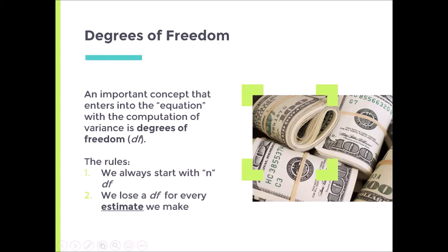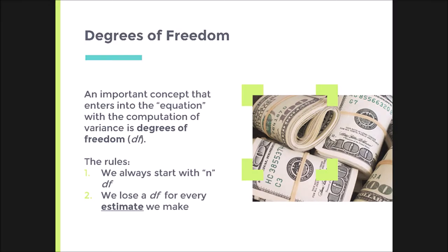So you always start with N degrees of freedom. Why? Because you have as many free scores to various people. So, for example, if I have four scores: three, seven, nine and nine. Say I've got these four scores.